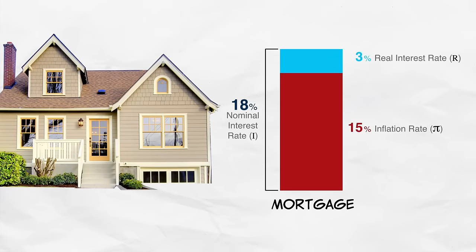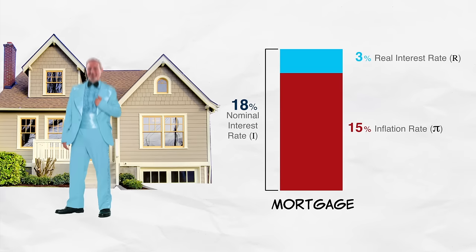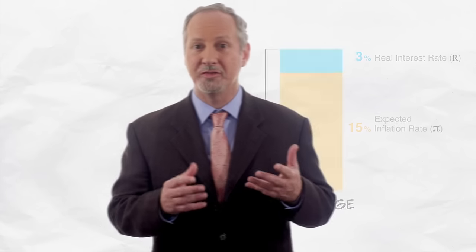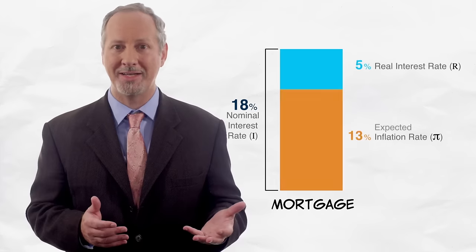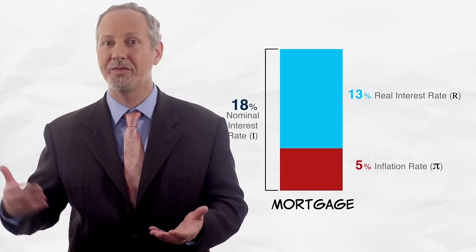So suppose instead that you took out a mortgage at an interest rate of 17% or 18% near the peak of inflation around 1981. What happened next? Unfortunately for you as a borrower, inflation fell from 15% to less than 5%.